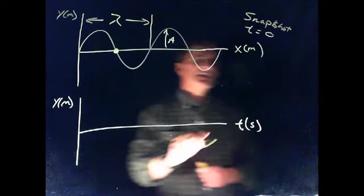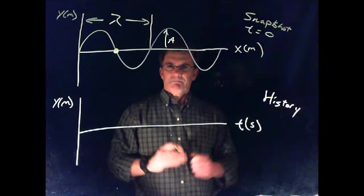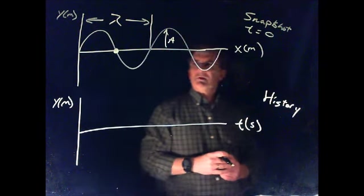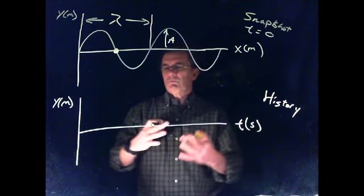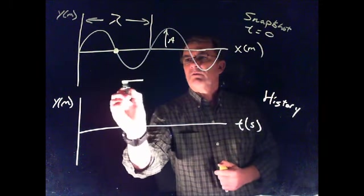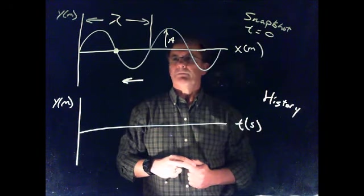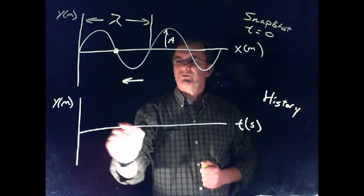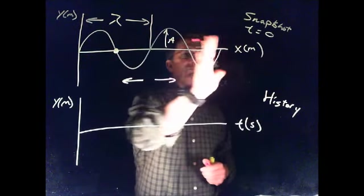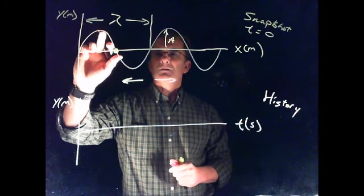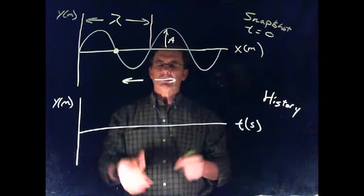Let's take a look at this point right here. What I'm interested in is graphing a history graph. This is going to be the position as a function of time of that point as the wave passes through it. One of the things we have to know is what direction is the wave going - left or right? Because that determines what this graph looks like. If the wave is moving left, this particle is going to start dropping down.